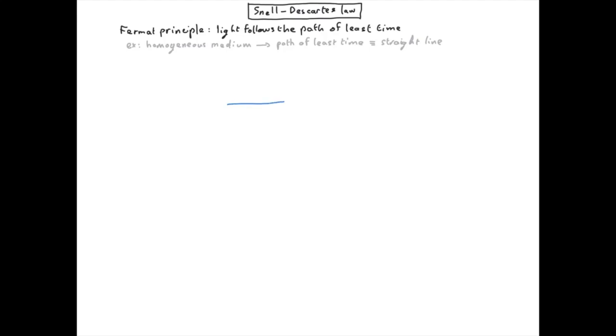So let's consider a point A in water and a point B in the air. The reason why light is not going in a straight line from A to B is because the speed of light is not the same in the air than in water. And in fact, it's slower in water than in the air.